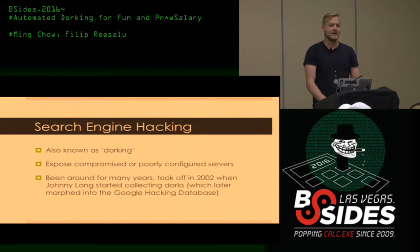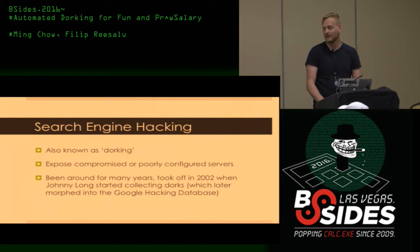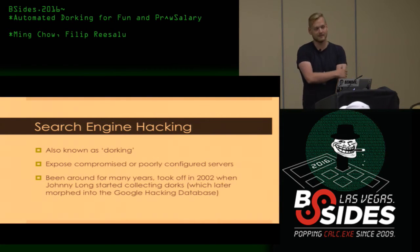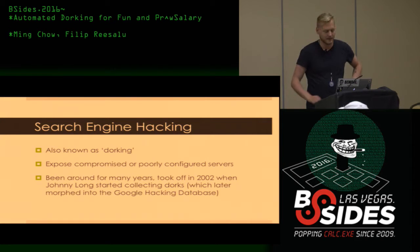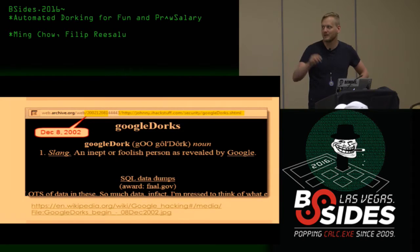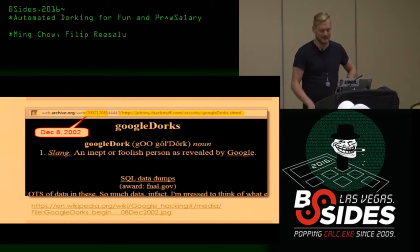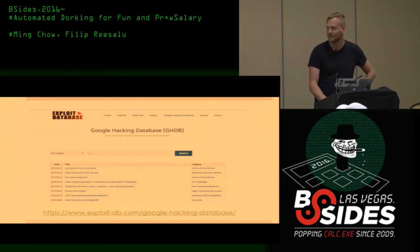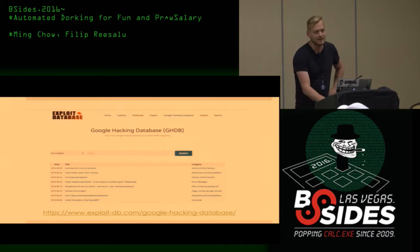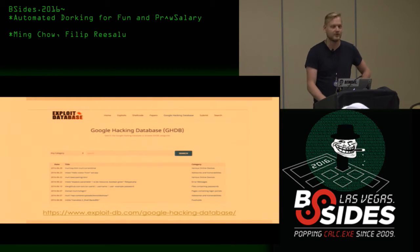Dorking, or search engine hacking, is nothing new. It's been around for ages. It sort of took off in 2002 when Johnny Long started collecting a little database of dorks — these clever search terms. We can see why it's called a dork from the original page: 'Google dork — an inept or foolish person as revealed by Google.' This has morphed into a shinier thing. Exploit DB now hosts the Google Hacking Database.